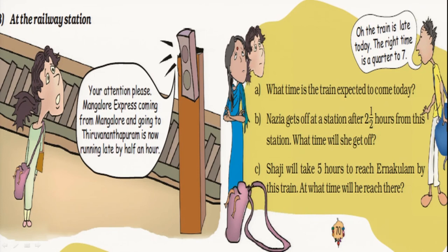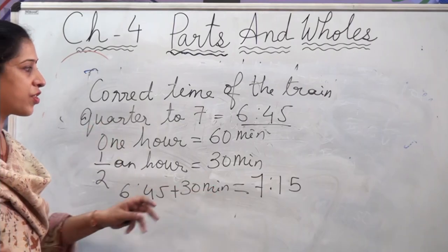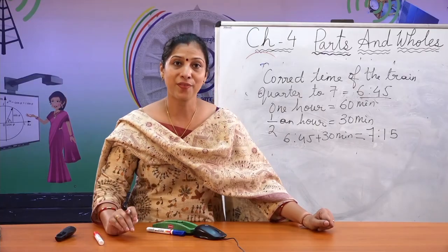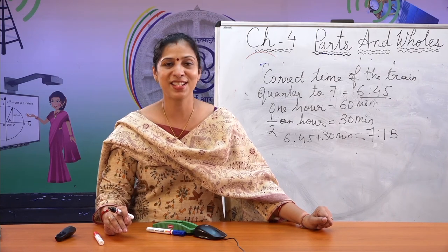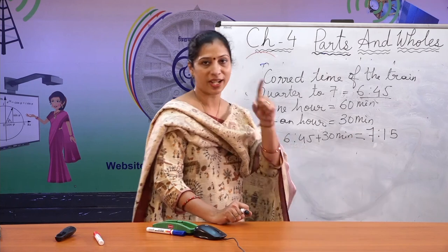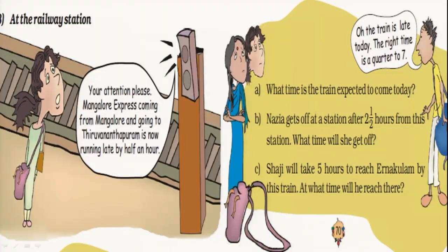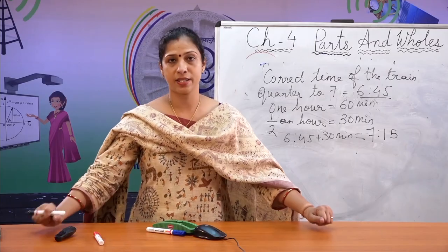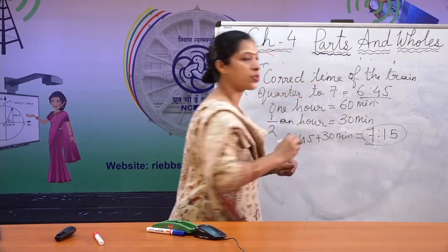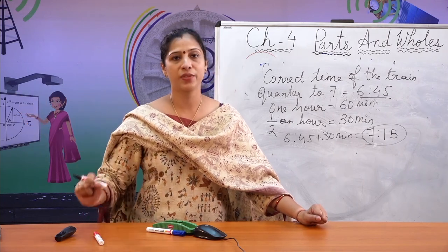Nazia gets off at a station two and a half hours after this station. The train reaches at 7:15. So we add two and a half hours to 7:15 — you can do it on your own. Also, Shaji will take five more hours to reach Ernakulam. The train is at 7:15 at this station, so we add five hours: 7:15 plus 5 hours. You can find the answer.